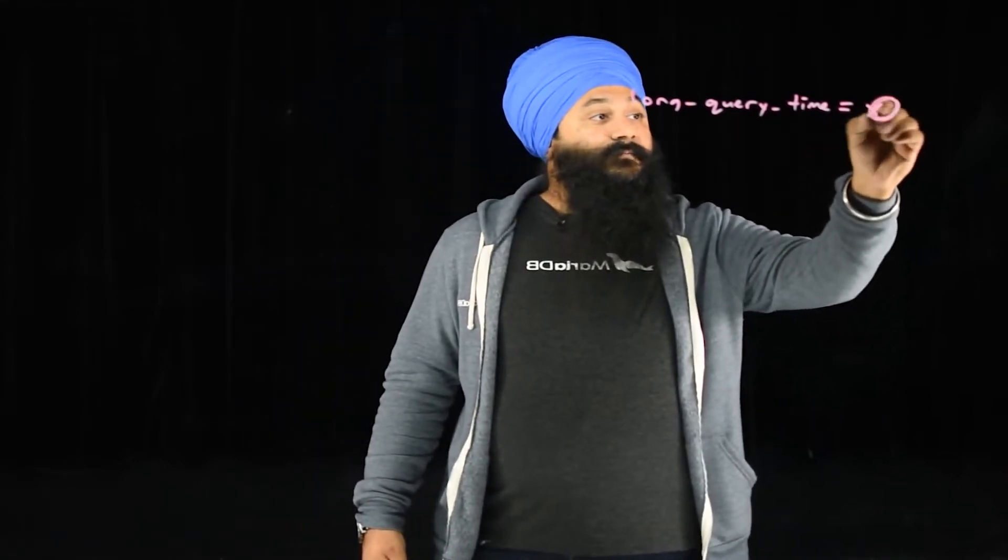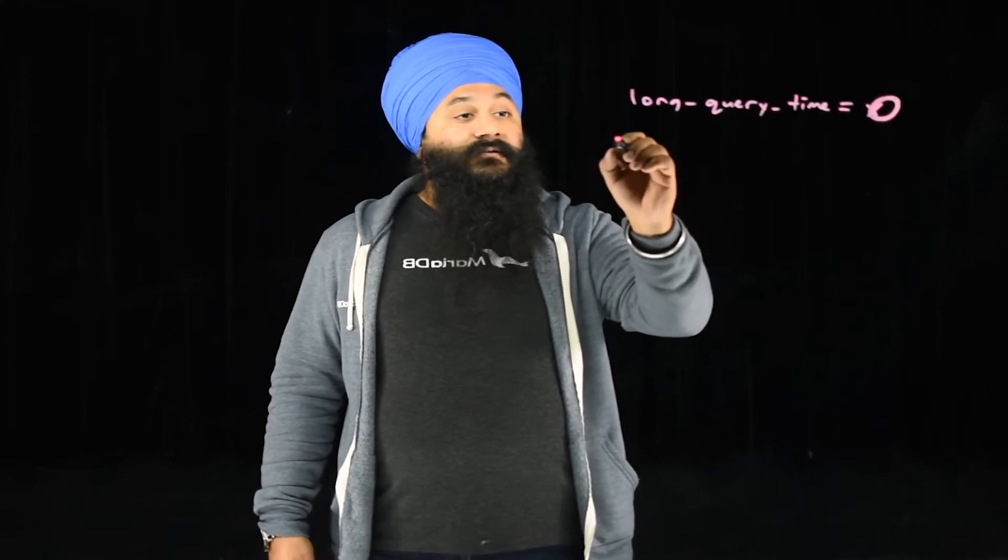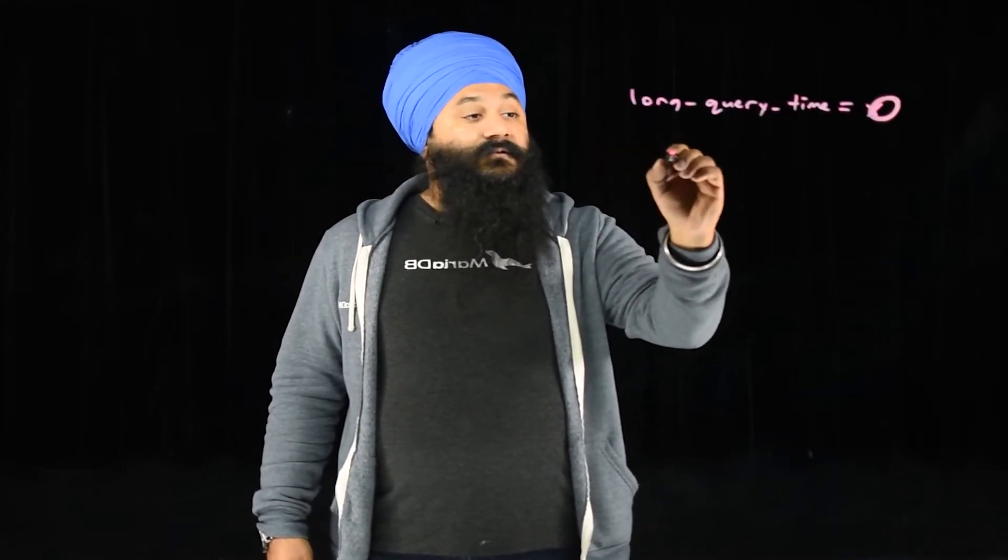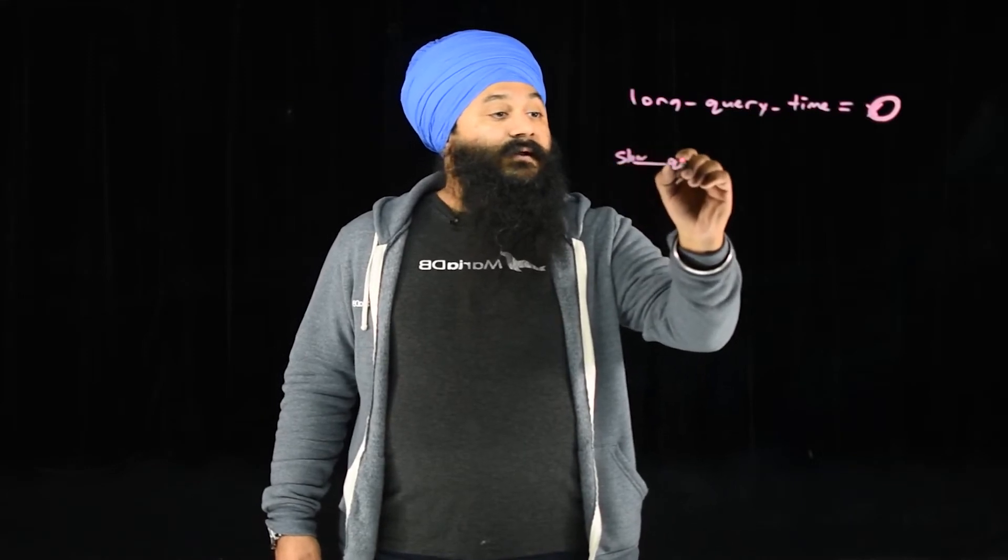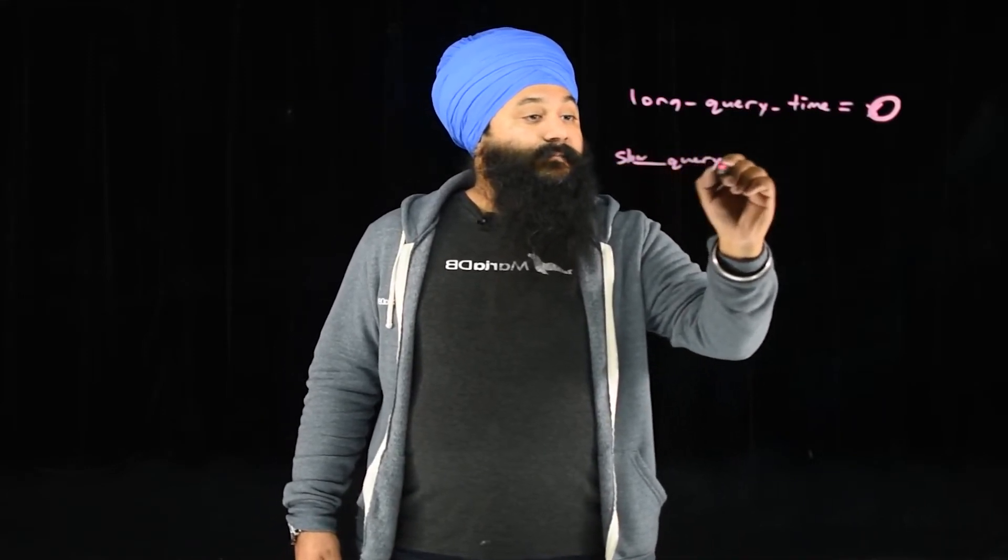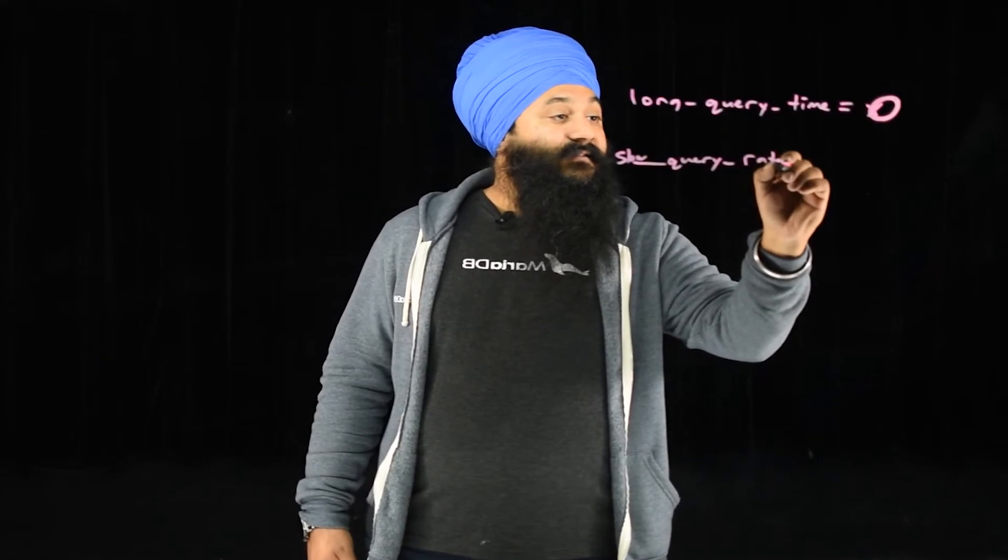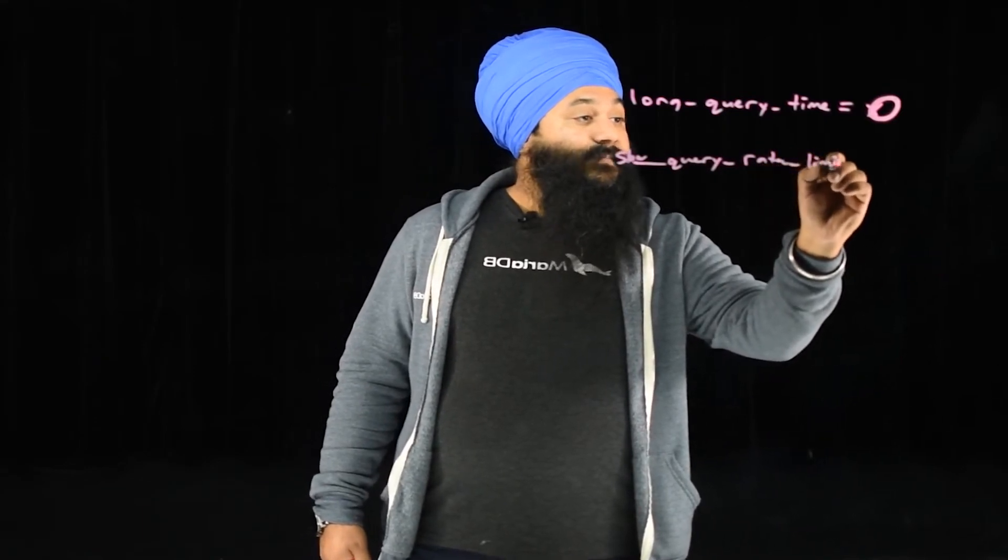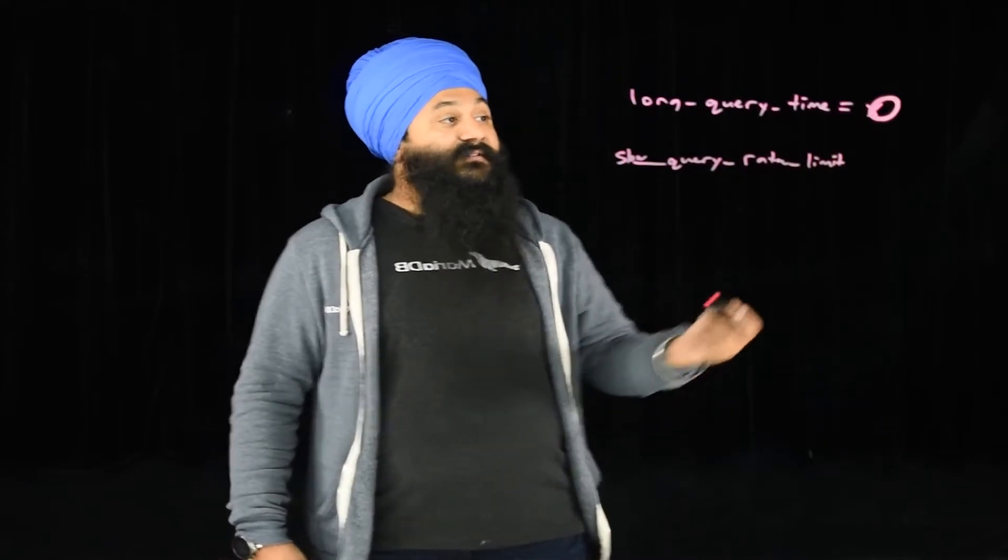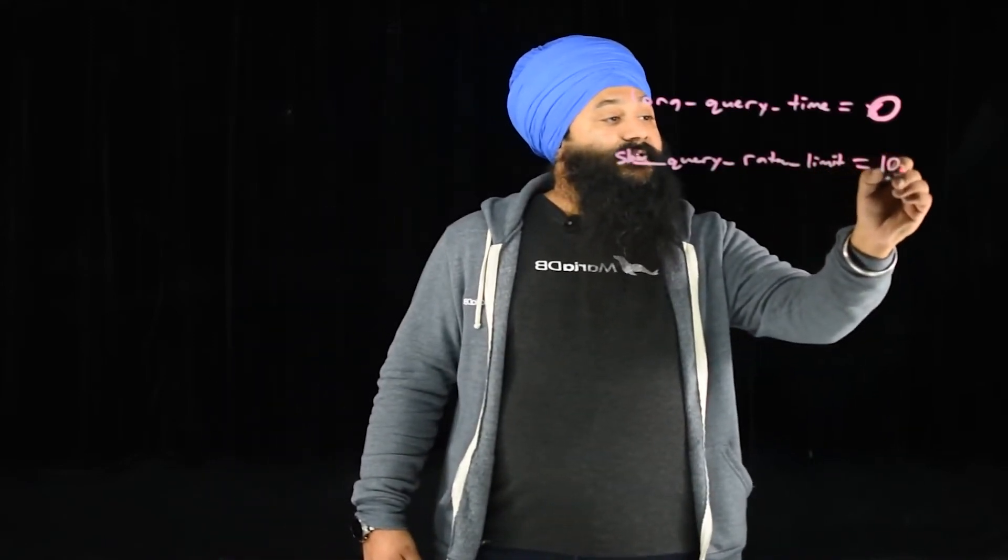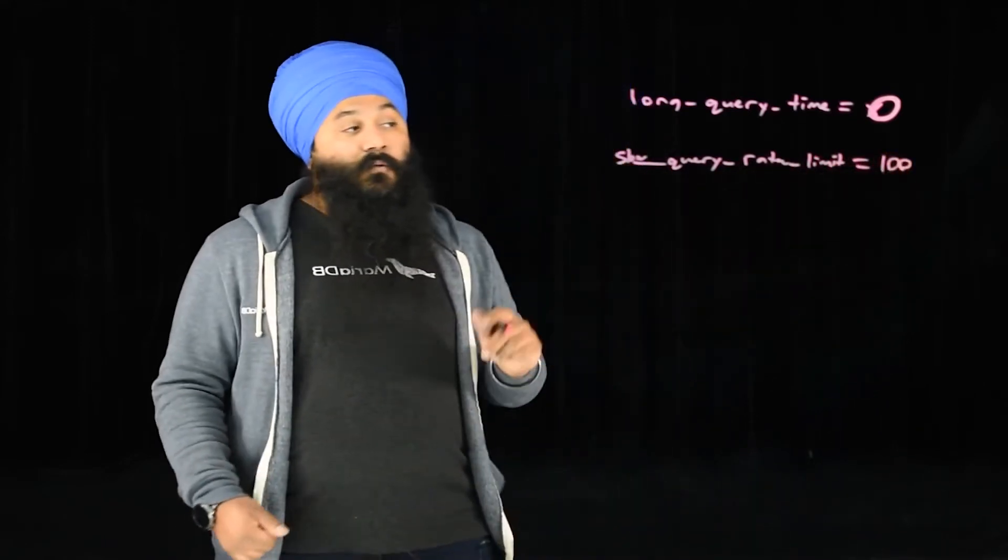You can set this variable to zero. Now every query is logged. What you're going to want to do though is use the slow query rate limit. And that rate limit is basically, let's say it's logging a hundred of a type of query per second. If we set this to a hundred, it will only write one out of a hundred.